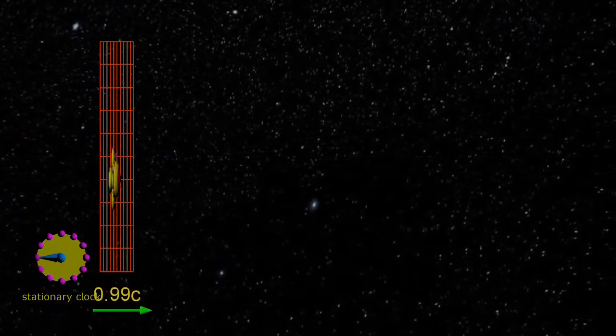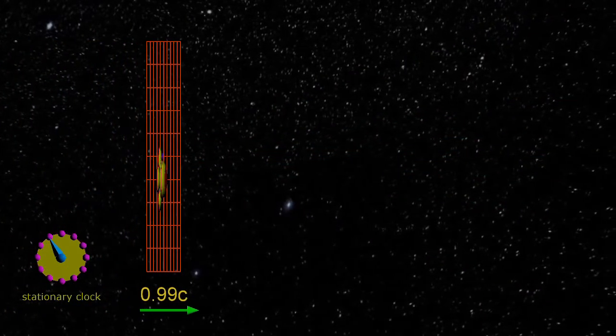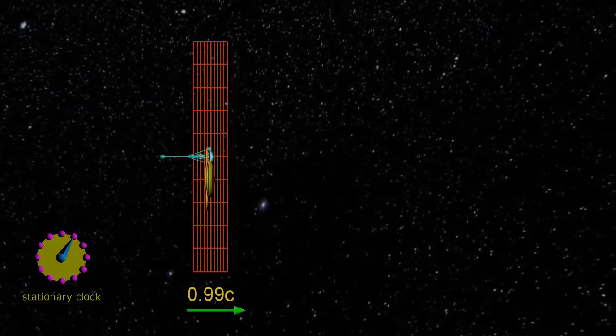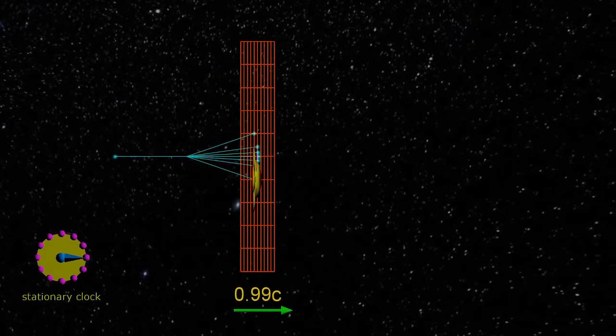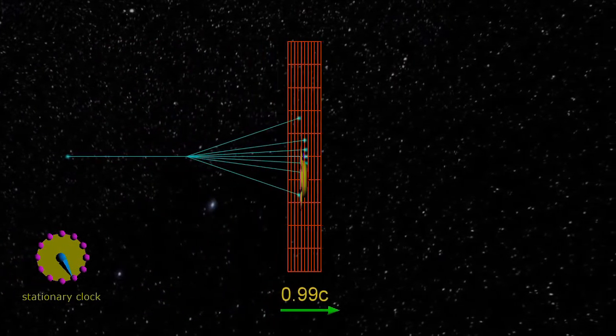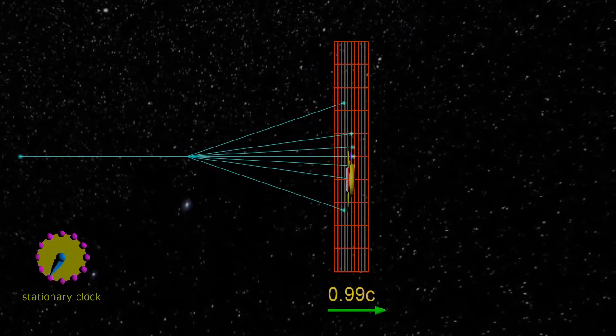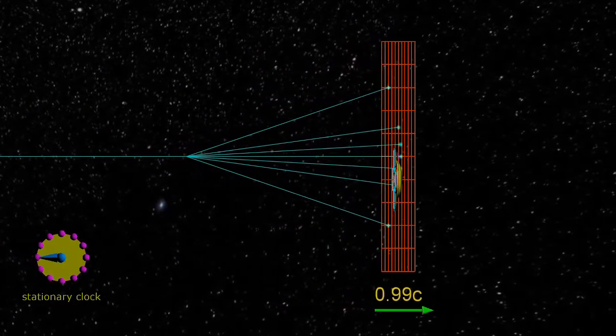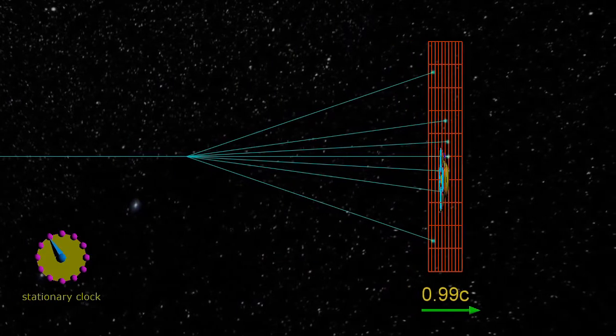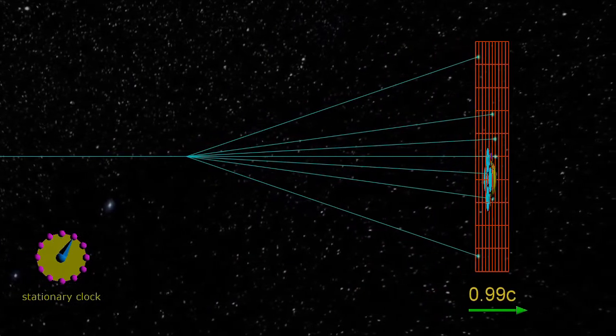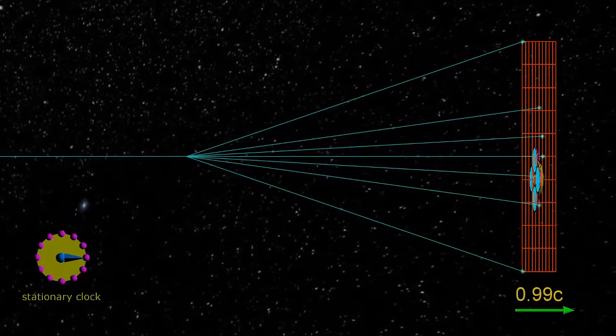The time dilation effect can be seen by the fact that the photon that moves above the light bulb is traversing seven times more space than when the spacecraft was stationary. A clock in the yellow spacecraft would be running seven times slower than our stationary clock.